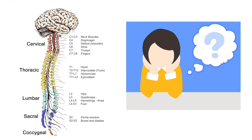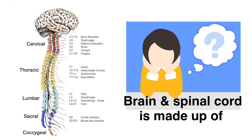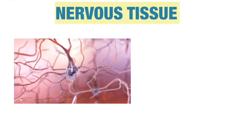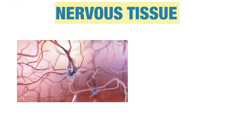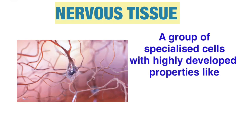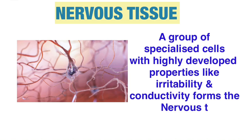Now comes the question: what is the brain and spinal cord made up of? They are made up of the tissue which is called nervous tissue. A group of specialized cells with highly developed properties of irritability and conductivity forms the nervous tissue.